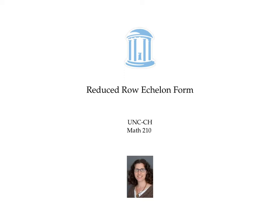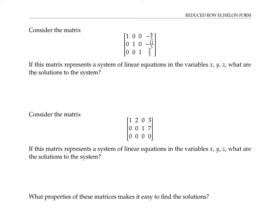This video introduces a form of a matrix called reduced row echelon form that can be handy when using matrices to solve systems of linear equations. Consider this matrix that appeared in a previous video. If this matrix represents a system of linear equations in the variables x, y, and z, then what are the solutions to the system?